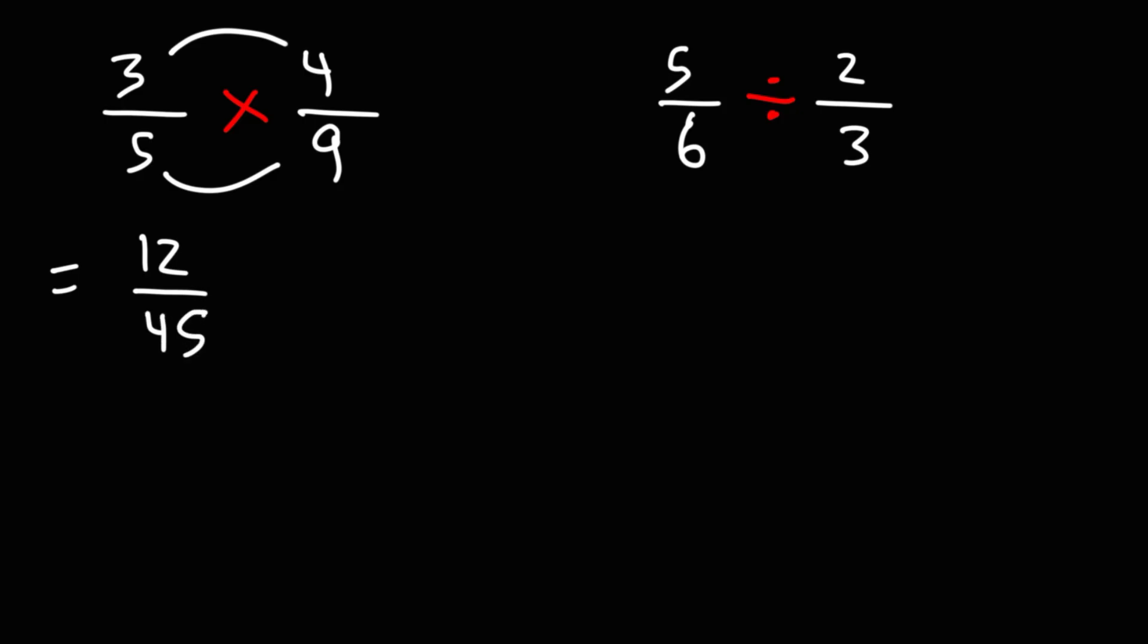And then you need to see if you can reduce the two fractions. Both 12 and 45 are divisible by 3, so we can divide both numbers by 3. 12 divided by 3 is 4. 45 divided by 3 is 15. And we can't simplify that any further, so the answer is 4 over 15.